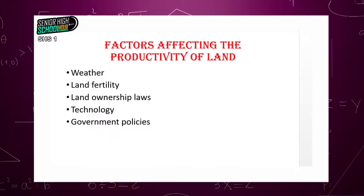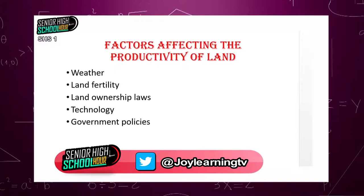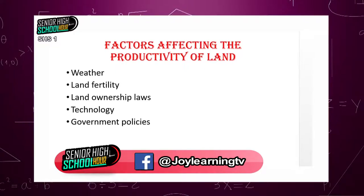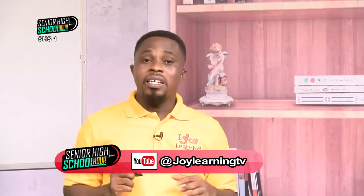Land ownership laws also affect productivity of land. The ownership of land is posing a challenge to productivity, to the extent that there are so many lands with litigations, especially in urban areas — left bare, not being used to produce anything or cultivate crops, not having any structures built on them, just because those lands are under litigation. This person says 'I own it,' that person says 'I own it,' and because it is in court, that land will not be available for development.